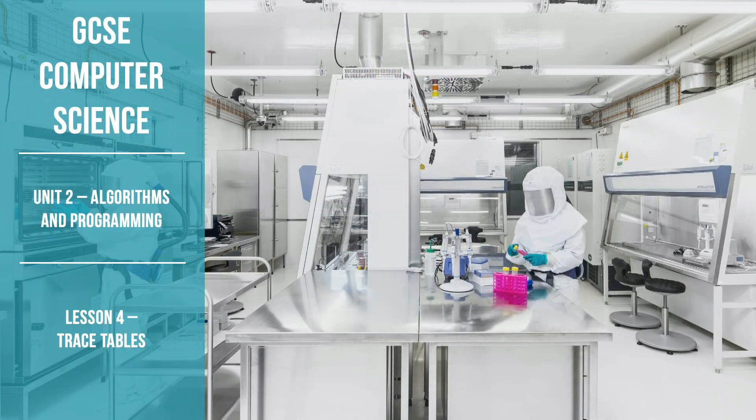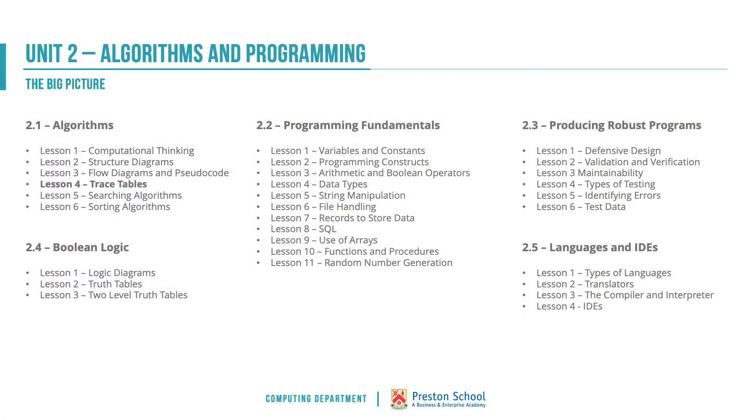This is the fourth lesson, trace tables, and this forms part of the 2.1 algorithms section of unit 2 algorithms and programming. In terms of our bigger picture, this is the fourth lesson in the 2.1 algorithms part of the course. There are five elements to unit 2 and this is quite early on in terms of our progress through this unit.